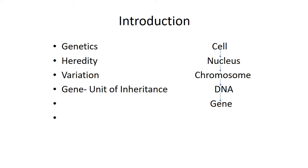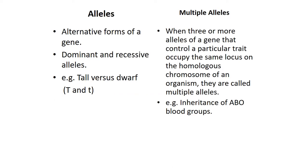The cell which contains a nucleus — the managing director of the cell — is composed of chromosomes. The chromosomes are composed of DNA, and DNA contains genes. A gene is nothing but a portion of DNA. The alternative forms of a gene are called alleles. Alleles may be dominant or recessive. For example, tall versus dwarf: capital T and small t.